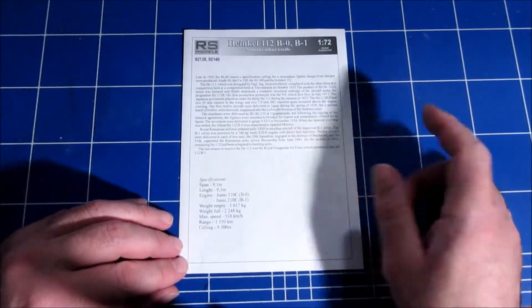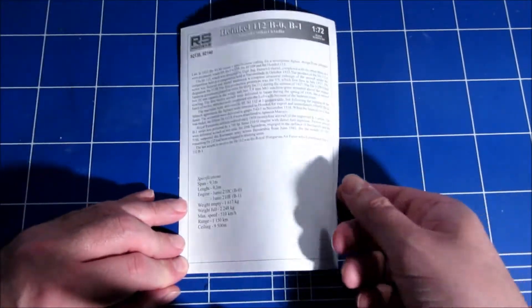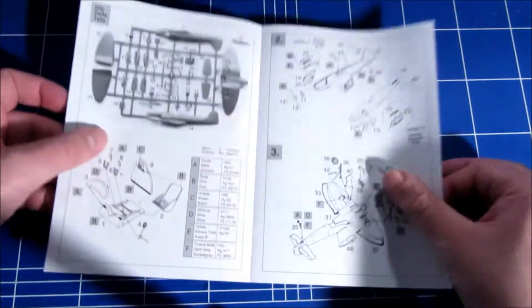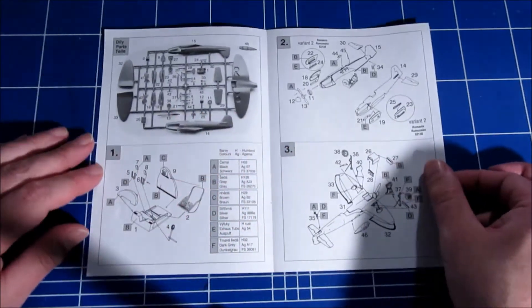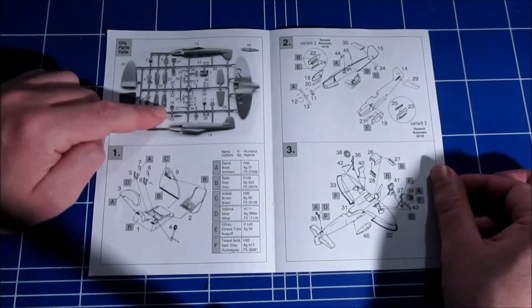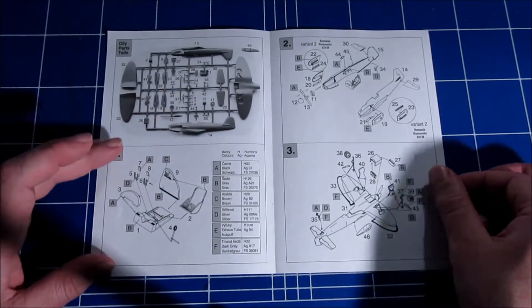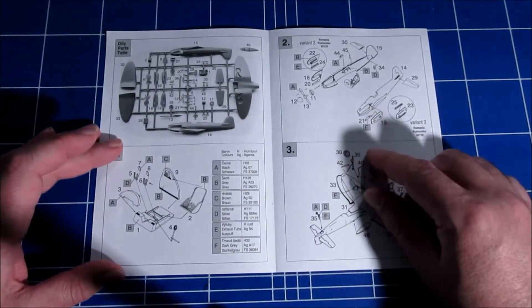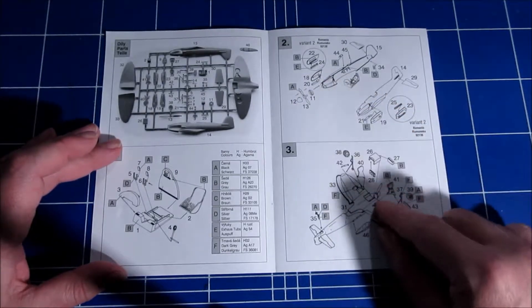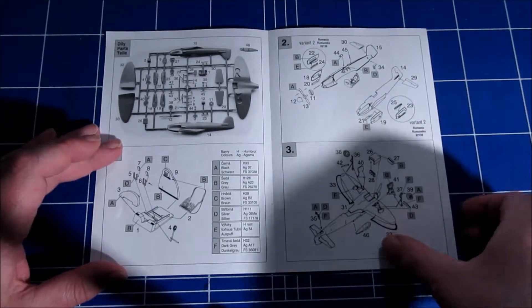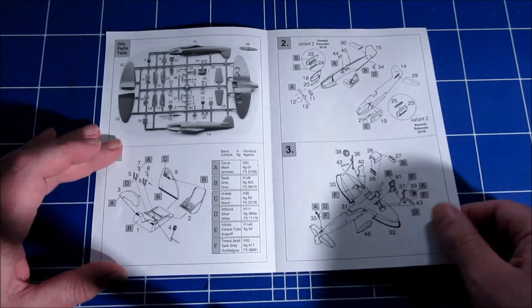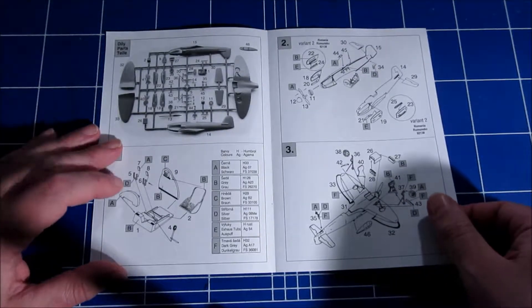The instructions. Story in English. A photograph of the sprue map. And the building instructions with some nice artistic drawings. But clear enough to go through the assembly. It is a very small kit.